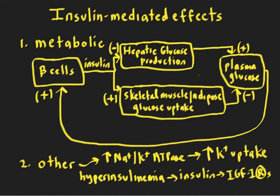Let's start here with the metabolic effects of insulin. This is a review of the feedback control of plasma glucose, as shown in the previous video. We have the beta cells, hepatic glucose production in skeletal muscle and adipose glucose uptake, and we have our plasma glucose, which is the controlled variable.